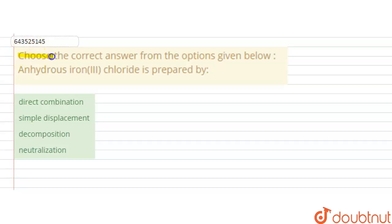Hello students, the question is: choose the correct answer from the options given below. Anhydrous iron(III) chloride is prepared by...